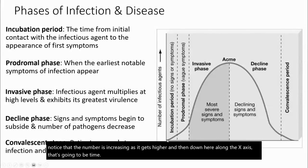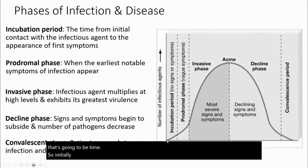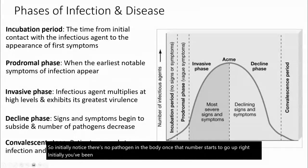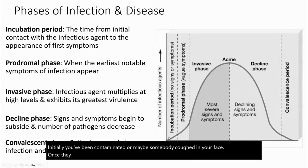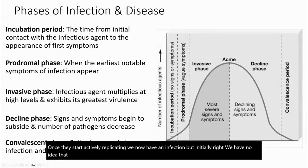Initially there's no pathogen in the body. Once that number starts to go up — maybe somebody coughed in your face — once they start actively replicating, we now have an infection. But initially we have no idea that we're infected.